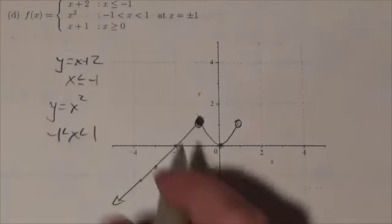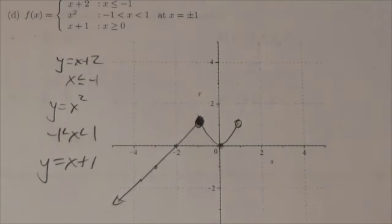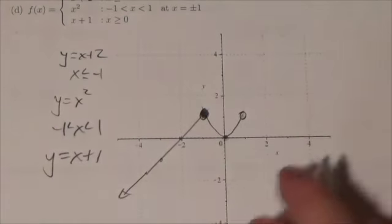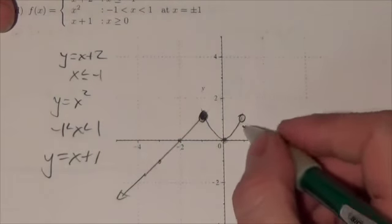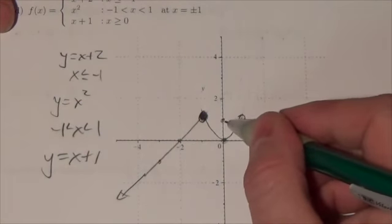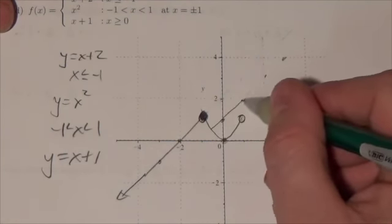Then I take a look at the third function there, x plus 1, y equals x plus 1. x plus 1 is a line that has a y-intercept of 1 and a slope of 1, so 1 up, over 1, 1 up, over 1, 1 up, over 1. So it's going to look like this.